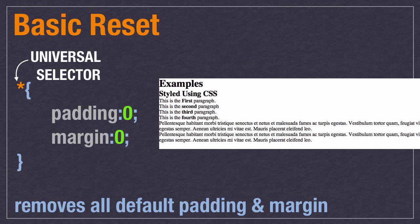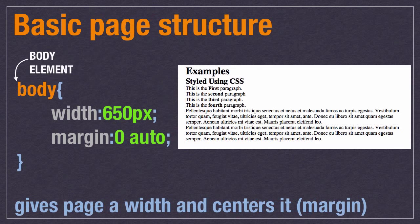We took out all the padding and margins, and you can see on the right it made everything look scrunched together. So we're going to go through and style this in the next few steps. The first is our basic page structure, dealing with the body element. Remember, all the content we can see is contained inside the body. The first declaration changes the width of the page.